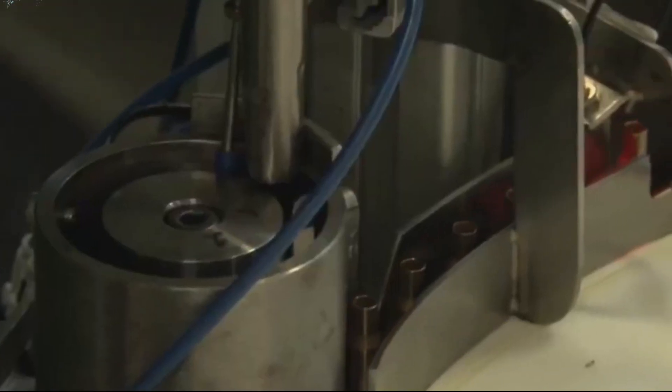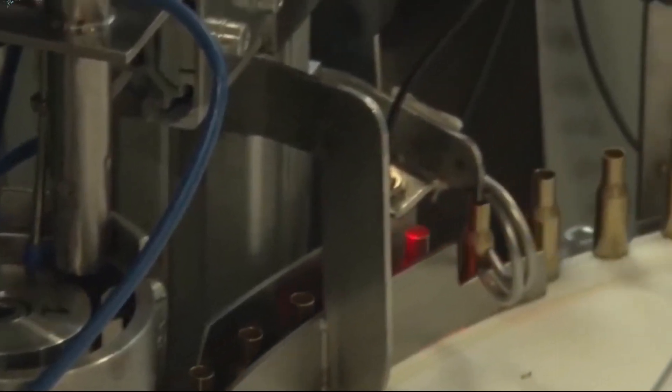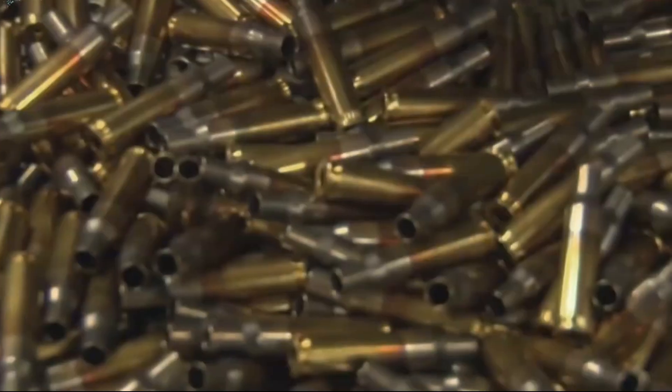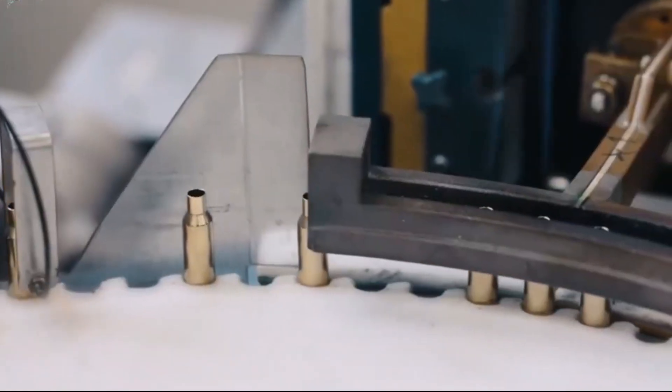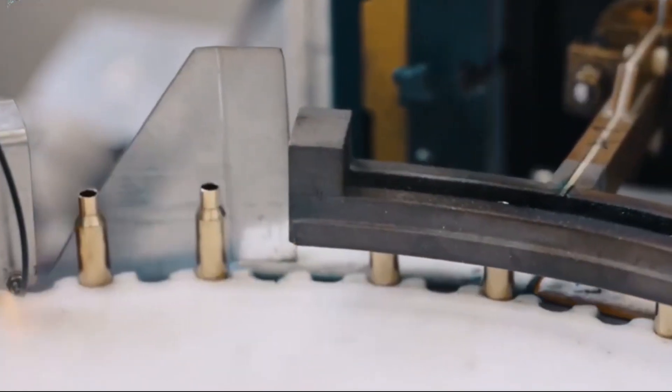This cold-forming process work hardens the brass, giving it the necessary strength to withstand the pressures of firing. After drawing, the case is moved to heading machines that form the rim at the base and create the extractor groove.